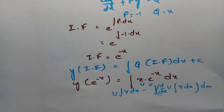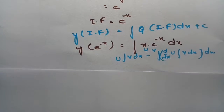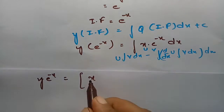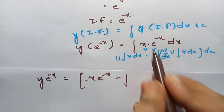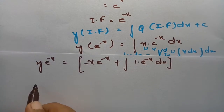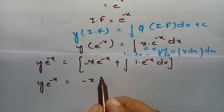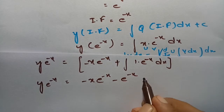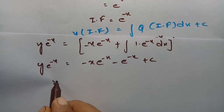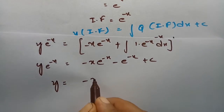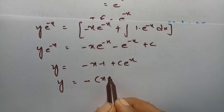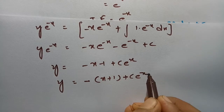The solution is y · (integrating factor) = ∫Q · (integrating factor) dx + C. So y · e^(-x) = ∫x · e^(-x) dx. Using the UV rule (integration by parts): y · e^(-x) = -x·e^(-x) - (-e^(-x)) + C = -x·e^(-x) + e^(-x) + C... wait, that gives y·e^(-x) = -x·e^(-x) - e^(-x) + C.